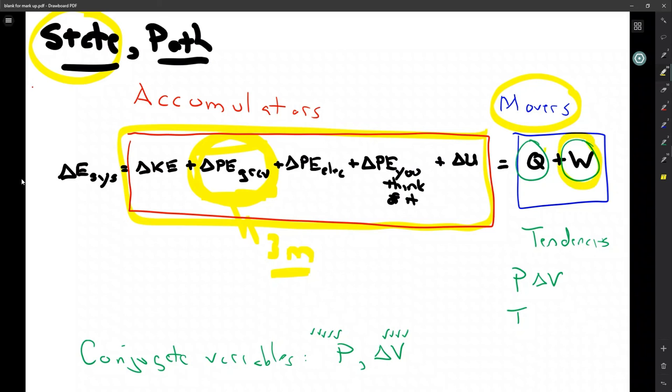But over here, it's going to be very important that Q and W are movers. They're going to be path variables. It depends on how we do it. If we just did 10 steps straight up, that would require less net work than if we did seven steps up, three steps down, six steps up.